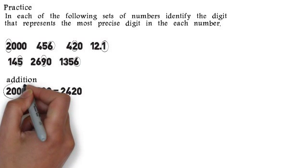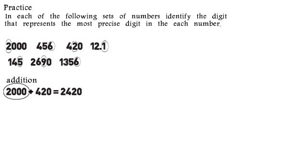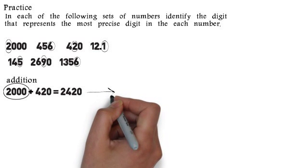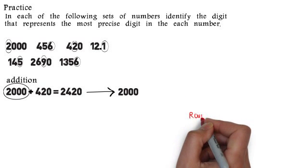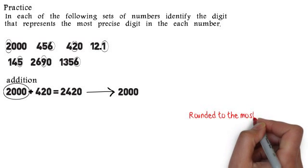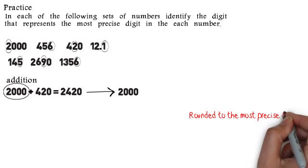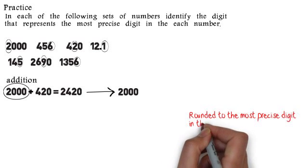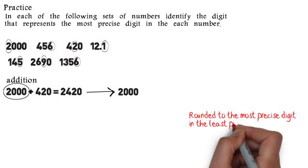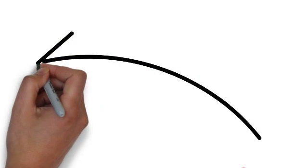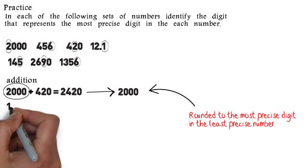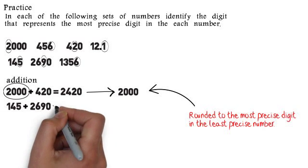Now when we do some addition, we want to identify which number is the least precise. When we add 2000 to 420, we get 2420, but 2000 is the least precise number. So we round to the most precise spot in 2000, which is the 2 in the thousands place. Rounding 2420 to the thousands place gives us 2000.